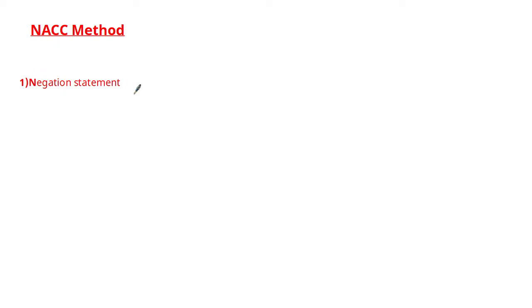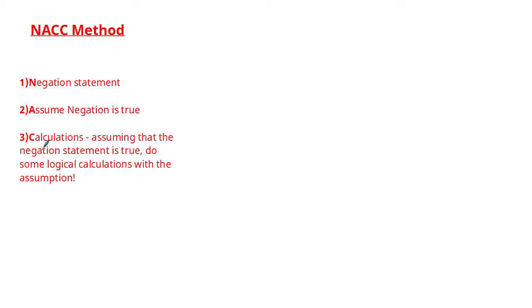The first letter N stands for Negation: the first thing you do is write the negation statement. We'll look at how to write negation statements for different types of statements shortly. The next step A is to Assume the negation statement you've just written is true. The next step C is to perform Calculations — assuming the negation is true, we do some logical calculations with those assumptions.